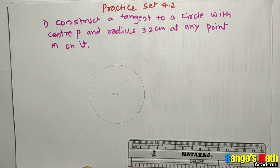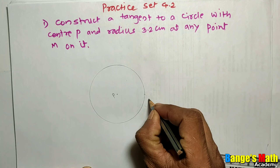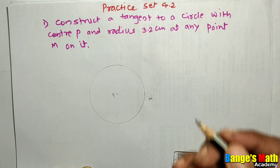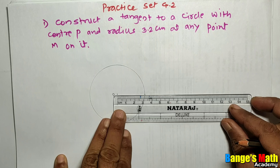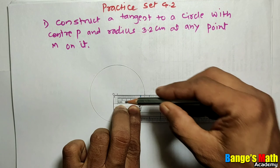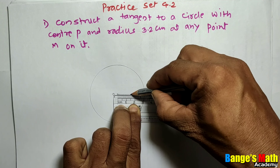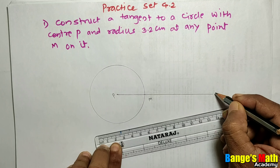We have to draw a tangent to the circle at any point M on it. So, take point M on the circle. Then, draw radius PM and extend it to the right-hand side.